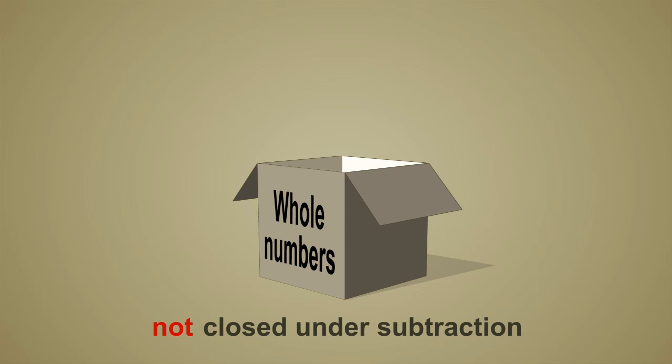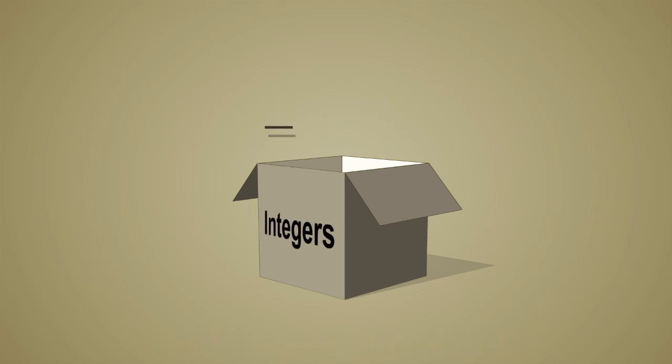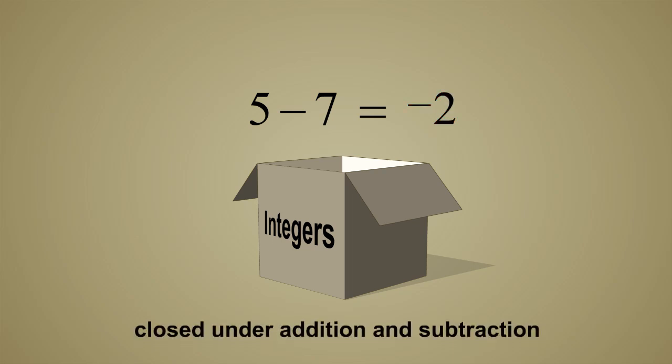These whole numbers which can be positive, negative, or zero are called integers. No matter how we add or subtract integers the result can always be represented by some integer. Therefore, integers are closed under both addition and subtraction.